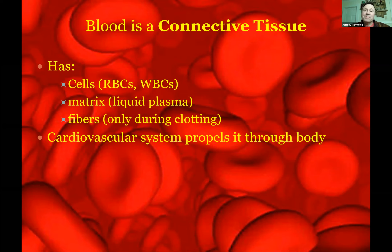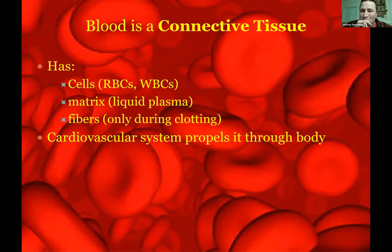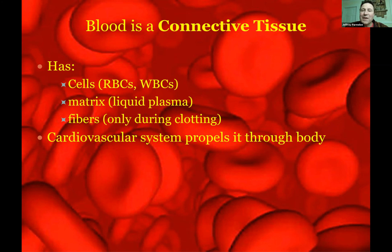You might ask: what about the fibers? It turns out the fibers are not visible until clotting happens. You have proteins like fibrinogen dissolved in the plasma. But under certain chemical conditions, they link together into fibers — a sticky mesh that clogs up a leak in a capillary. About half of blood volume is this yellow plasma, and the fibers are hidden but will appear under certain conditions.